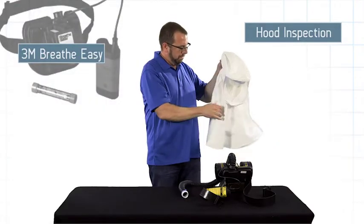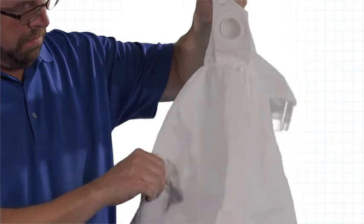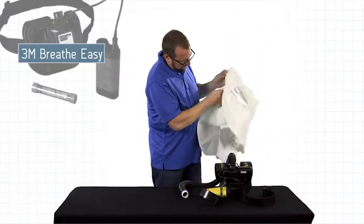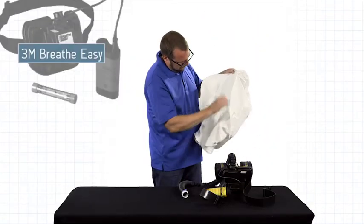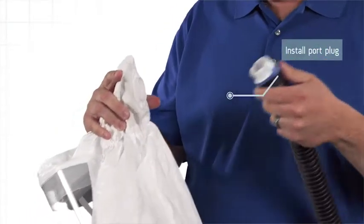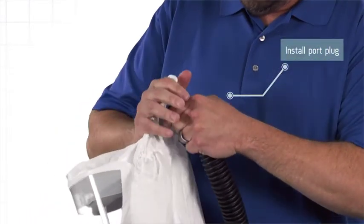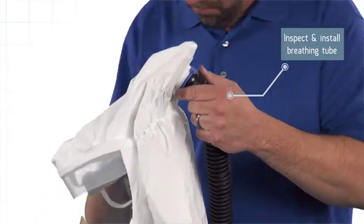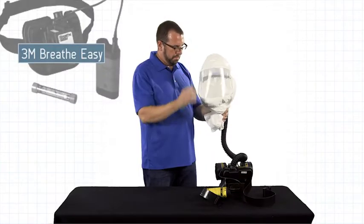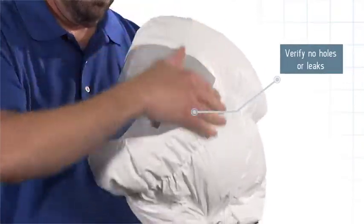Inspect the hood for any physical damage. Connect the hood to the breathing tube by snapping the breathing tube into the back of the hood. Squeeze the neck and inflate to verify there are no holes or leaks.